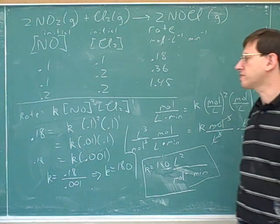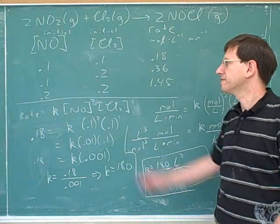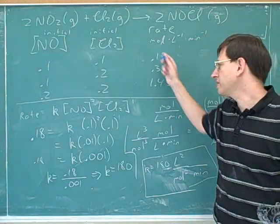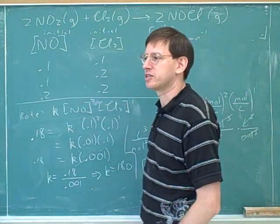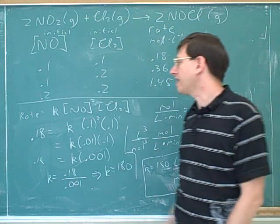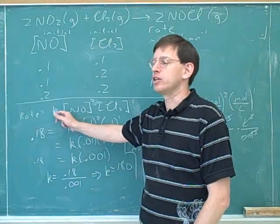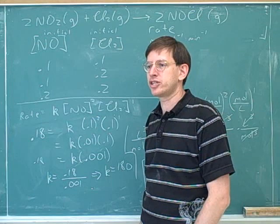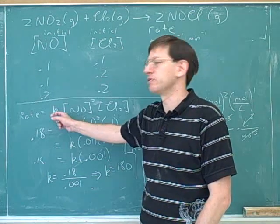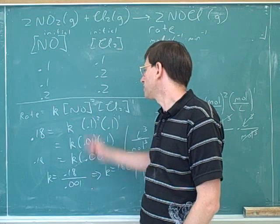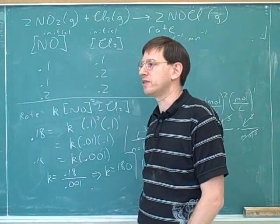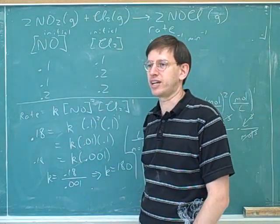Something else we saw here is the units for the rate constant are different for different reactions, because the units here depended on what the exponents were going to be. The units depended on what the exponents were going to be. So we can't figure out the units here until we know the exponents. So it's actually a popular type of question to ask you to figure out what are the units for the rate constant. That's a very fair game type of question, and that involves knowing what the exponents were here. So different rate expressions will have different units for the rate constant.